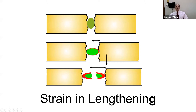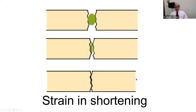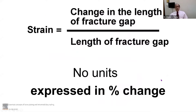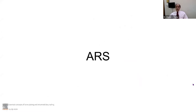Strain could be in lengthening the tissue, or it could also be in shortening the fracture site. Both ways, the thing is in strain and should be considered accordingly. As it is a ratio, it is expressed in percentages, and there are no units whatsoever. Now we have some questions that we would like you to answer, and at the end of the session I will give you the correct answer for all those questions.